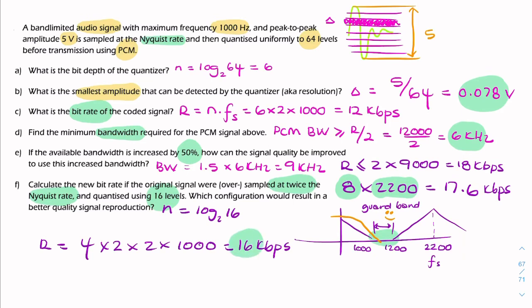So, compared to our 12 kilobits per second, we have more bits per second. But these more bits aren't as a result of a better ADC or a better quantizer. It's as a result of oversampling by a factor of 2.